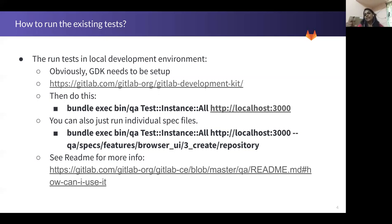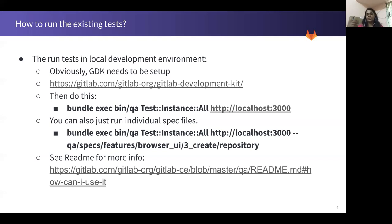You can also run individual spec files — I've mentioned an example of that here. For instance, if I want to run tests under a particular folder, I can just give the folder path, or I can even specify that spec file itself. You can also read more about the various ways to run the tests and what environment variables are being used. One variable that could be useful would be the username and password — there is a default username and password, but if you want to give a different one, you can use the environment variables GITLAB_USERNAME and GITLAB_PASSWORD as part of the bundle exec command. There's a bunch of information in the readme file as well.